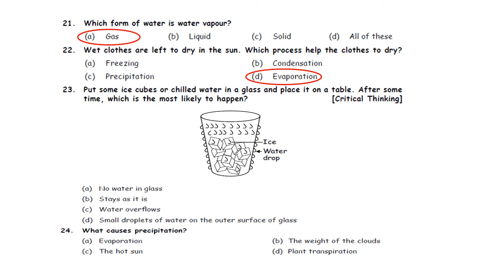Question 23: Put some ice cubes or chilled water in a glass and place it on a table. After some time, which is the most likely to happen? A. No water in glass. B. Stays as it is. C. Water overflows. D. Small droplets of water on the outer surface of glass. The correct answer is option D. These tiny water drops come from air — air contains water vapour, which gets cooled down due to the chilled water and gets converted into drops of water on the outer surface of the glass.